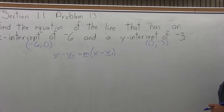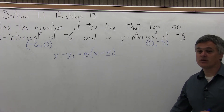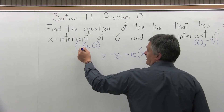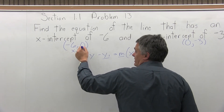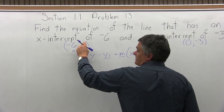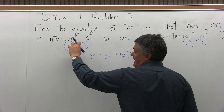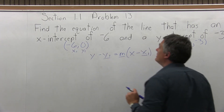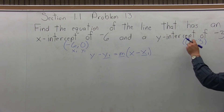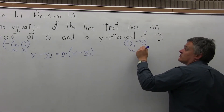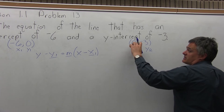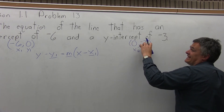Now that we have the coordinates of two points, it's much more similar to some previous problems. The first point has x-coordinate negative 6 — I label that as x1 — and y-coordinate 0, which becomes y1. The y-intercept is given second, so I consider it point 2: x2 equals 0 and y2 equals negative 3. Pay attention to the negatives — very easy to make a careless error with those.